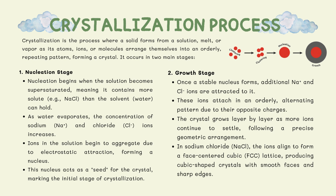In the second stage — growth — after the nucleus forms, more Na+ and Cl- ions are attracted to it. These ions align alternately, following their opposite charges, to form a stable repeating structure. The result is the familiar cubic crystal of sodium chloride, with smooth faces and sharp edges, arranged in a face-centered cubic lattice structure.